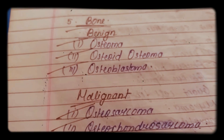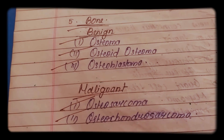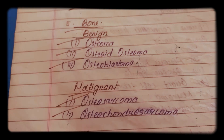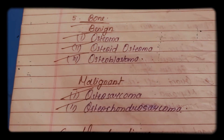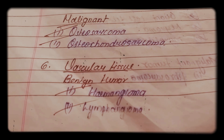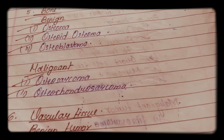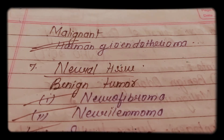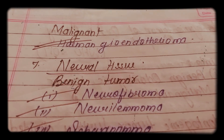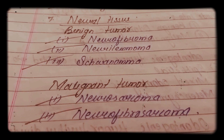The fifth type is bone tissue origin. Benign tumors include osteoma, osteoid osteoma, and osteoblastoma. Malignant tumors include osteosarcoma and osteochondrosarcoma. The sixth type is vascular tissue origin. Benign tumors include hemangioma and lymphangioma, and malignant tumors include hemangioendothelioma.